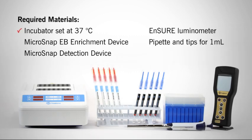The materials you will need include a dry block incubator capable of 37 degrees Celsius, a Microsnap EB enrichment device, detection device, the Ensure luminometer, a pipette and tips for 1 milliliter, and all required materials for product sample preparation.